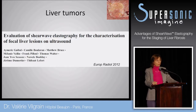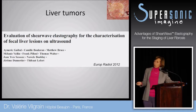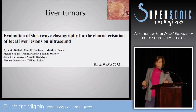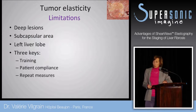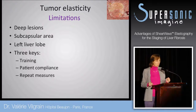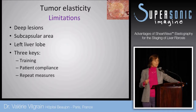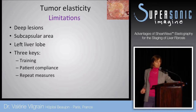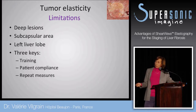Regarding liver tumors — beyond my main topic but very interesting. With diffuse liver disease we focus on the whole organ, but many patients have liver tumors. Is there a role for measuring tissue elasticity? There is an interesting paper from a French group in Lyon, but we face a more difficult challenge. Some tumors may be deep, subcapsular, or located in the left lobe, where recording tissue elasticity is much more difficult.